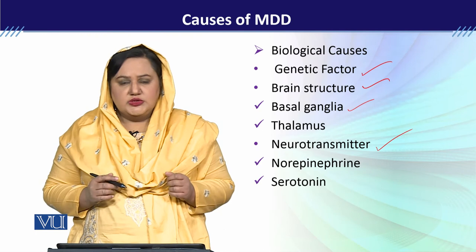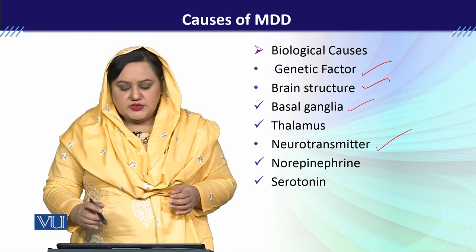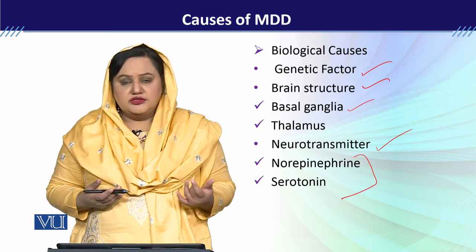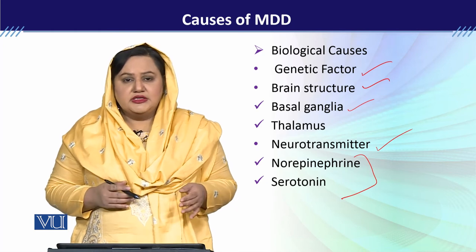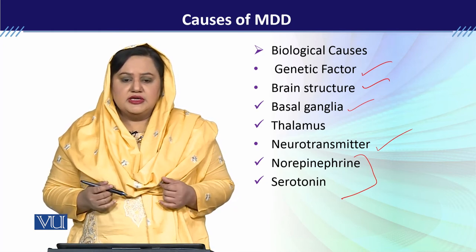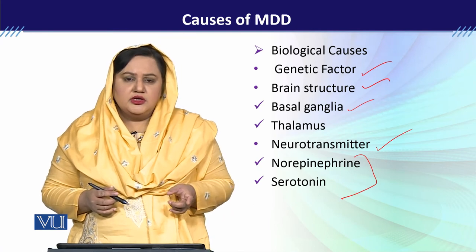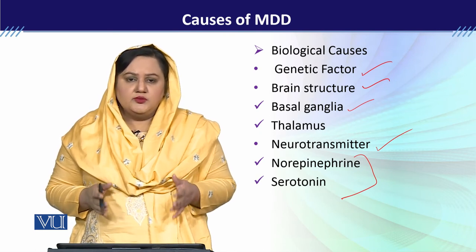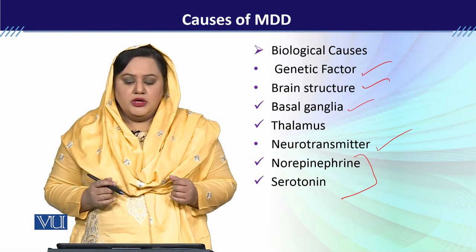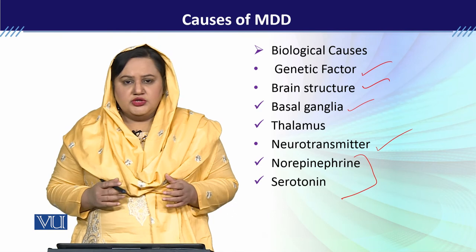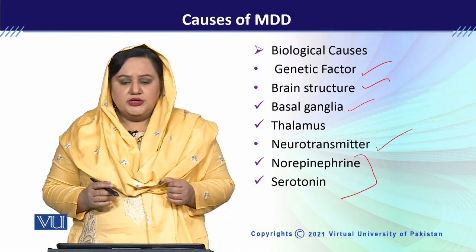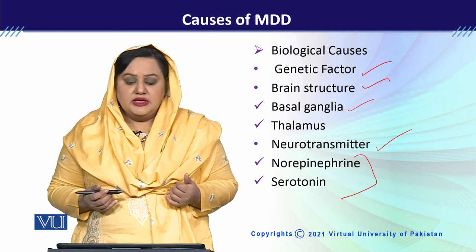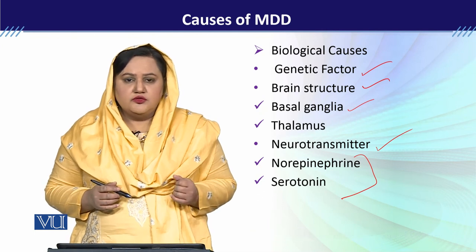Then we talk about neurotransmitters. Among neurotransmitters, it is said that norepinephrine and serotonin levels become depleted in depression patients. The activity of one or both of these neurotransmitters can decrease. Generally, abnormality in these two neurotransmitters has been observed. So when you see a client with depression, these biological causes of depression may be present.